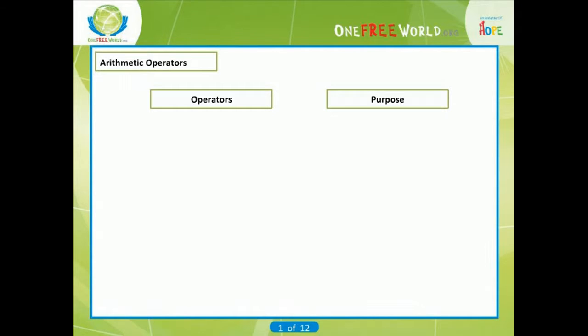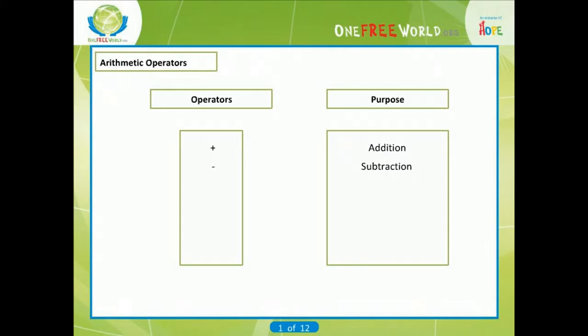To begin, there are five arithmetic operators. The plus sign is used for addition, the minus is used for subtraction, the star is used for multiplication, the slash is used for division, and the modulus sign is used for remainder after division.